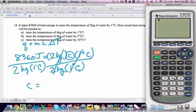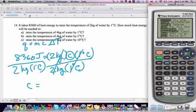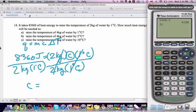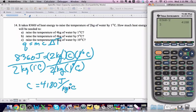8,360 divided by 2 times 1 equals 4,180. We check our units: joules on top, kilograms degrees Celsius on the bottom. That's a value you'll become familiar with, the specific heat capacity of water. Now we use that in solving parts A, B, and C.